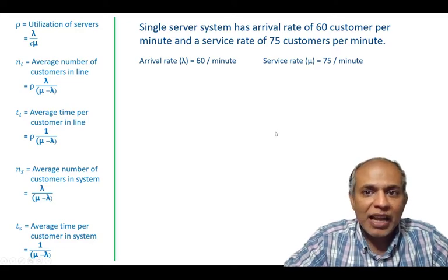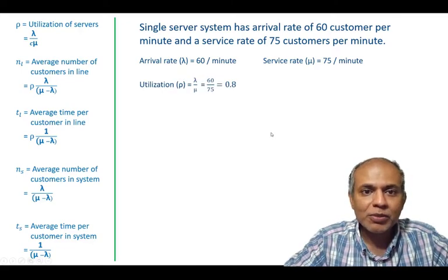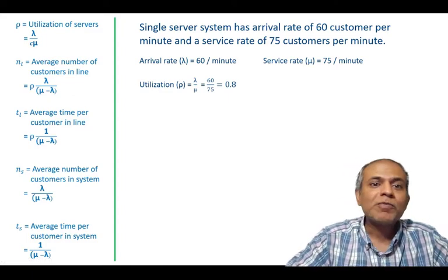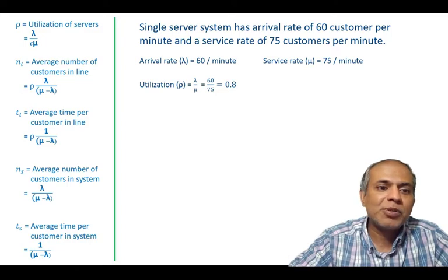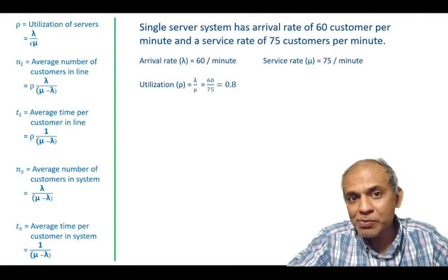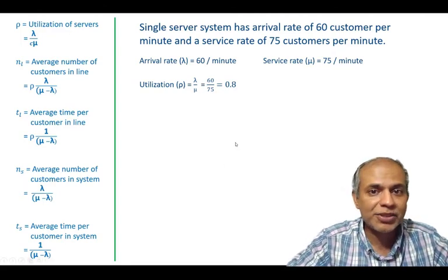Now once the lambda and mu are identified the calculation is very simple because the utilization, remember we have c is 1 here. So utilization is a very straightforward lambda by mu which is 0.80 or 80 percent. So my server on average is utilized 80 percent of the times.